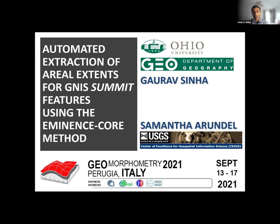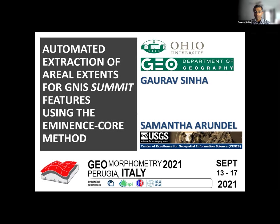This is a joint project — we have been collaborating on multiple things related to mapping of terrain features. This is one of those projects we ended up doing to figure out how to map named summits, which are called in the GNIS system. Think of them as named mountain peaks and how do we assign them geometry, because we don't have geometry for these terrain features.